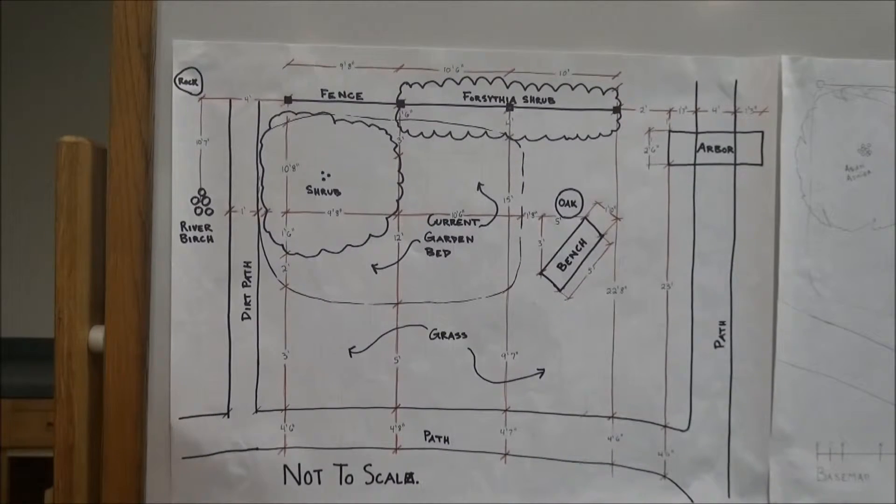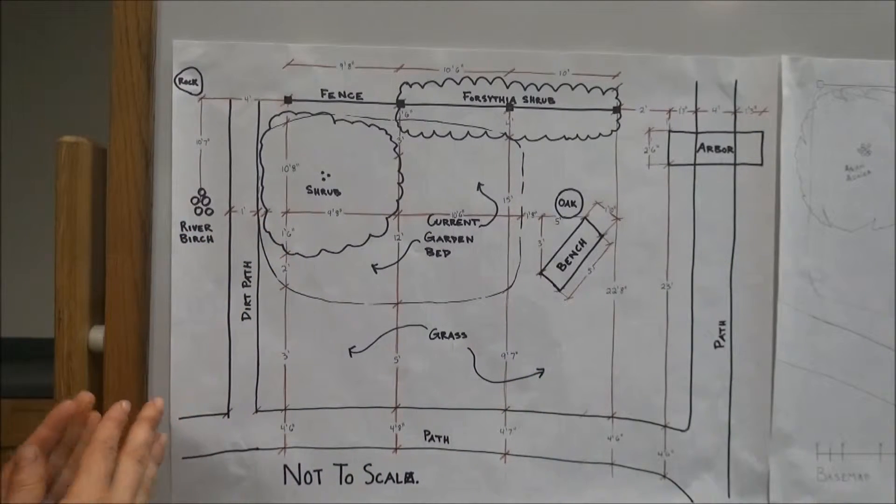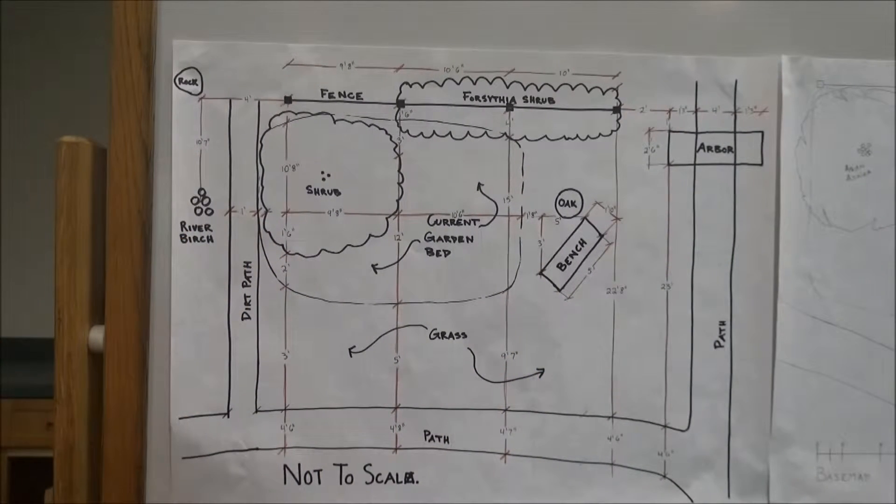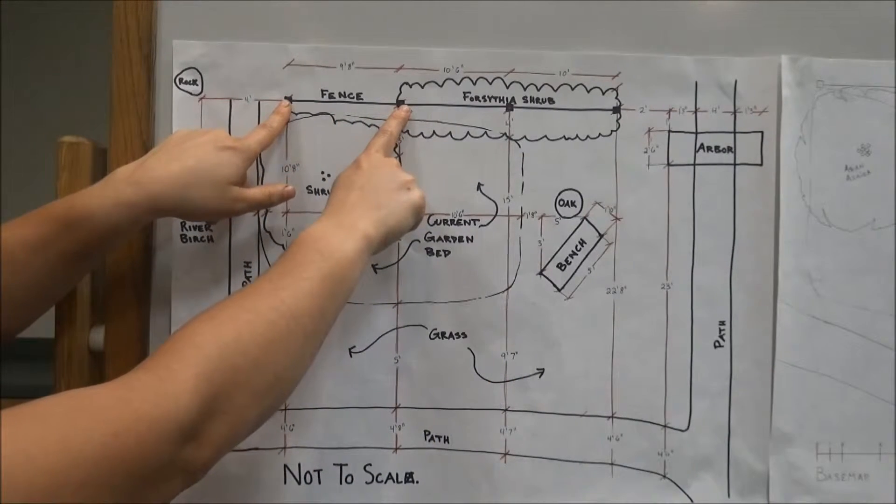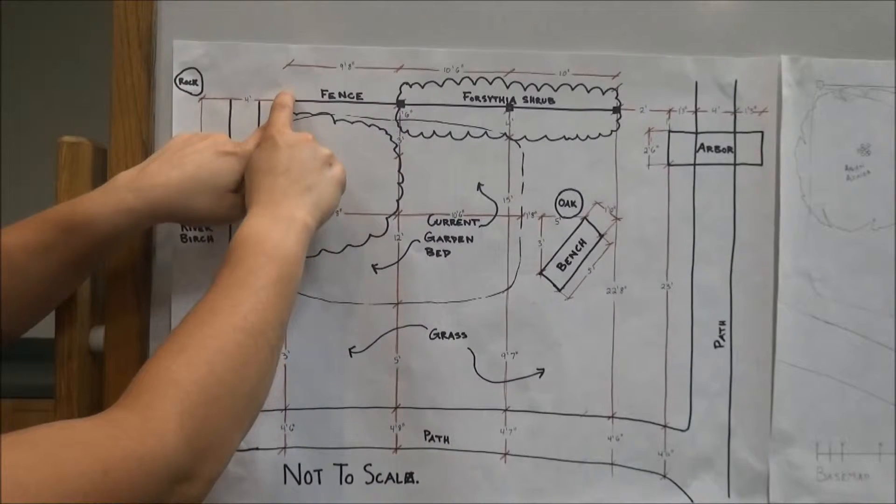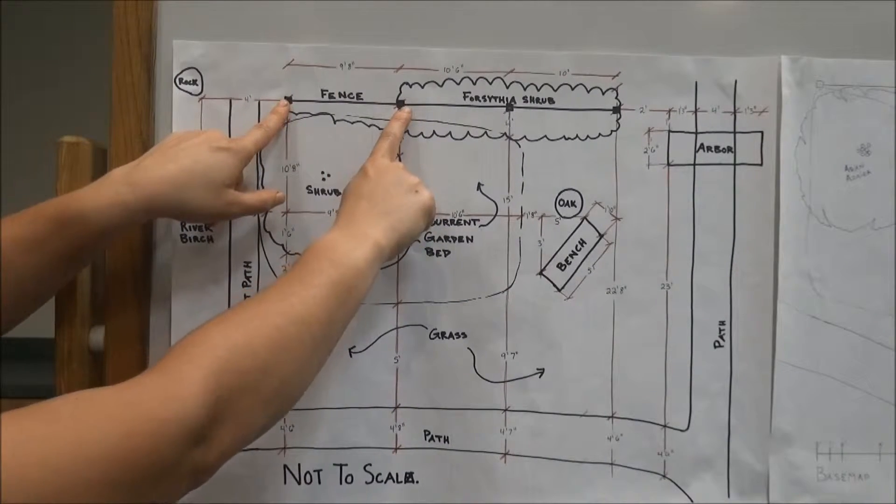Now we're going to learn how to take this map with good measurements written down nice and clear and translate that to a map to scale using our bar scale. So I start with the first fence post, it's my straight line. The first fence post to the second fence post is nine feet and eight inches.